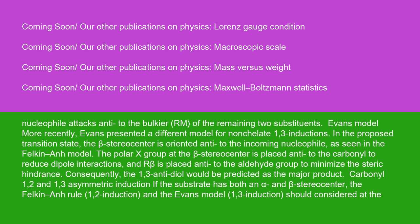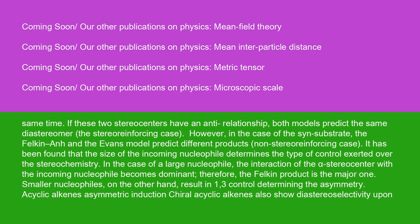Carbonyl 1,2- and 1,3-asymmetric induction: if the substrate has both an alpha and beta stereocenter, the Felkin-Anh rule for 1,2-induction and the Evans model for 1,3-induction should be considered at the same time. If these two stereocenters have an anti-relationship, both models predict the same diastereomer — the stereoreinforcing case. However, in the case of the syn substrate, the Felkin-Anh and Evans models predict different products — the non-stereoreinforcing case. It has been found that the size of the incoming nucleophile determines the type of control exerted over the stereochemistry. In the case of a large nucleophile, the interaction of the alpha stereocenter with the incoming nucleophile becomes dominant; therefore the Felkin product is the major one. Smaller nucleophiles result in 1,3-control determining the asymmetry.